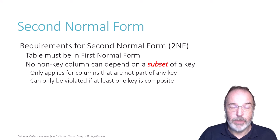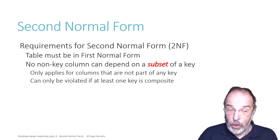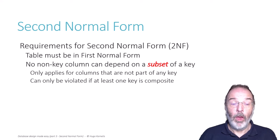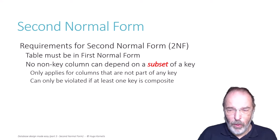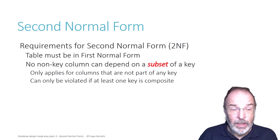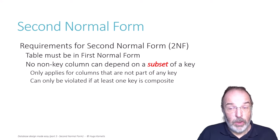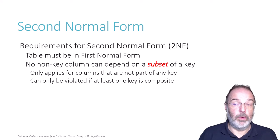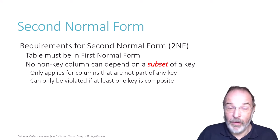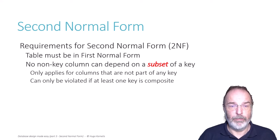So if you have no non-key columns, or if all candidate keys are single-column keys, then it is simply impossible to violate second normal form. And as long as you adhere to first normal form, that table is automatically in second normal form.